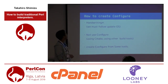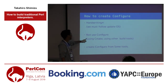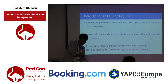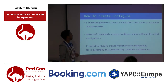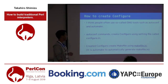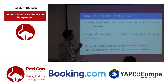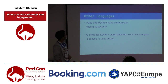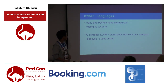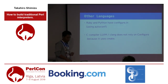How is configure created? I think instead of hand-writing it, it's created from a tool. People often use tools such as autoconf and automake. Autoconf creates configure using a setting file called configure.in, and configure creates the makefile using makefile.in. Ruby and Python also use configure.in with autoconf. The C compiler LLVM does not rely on configure — it uses CMake instead.